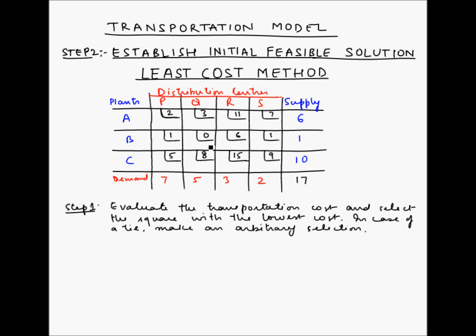In this transportation table, the square with the lowest cost is BQ which has a cost of 0. Step 2 says that depending upon the supply and demand condition, allocate the maximum possible units to the square with the lowest cost.